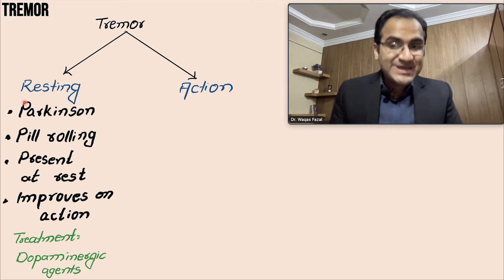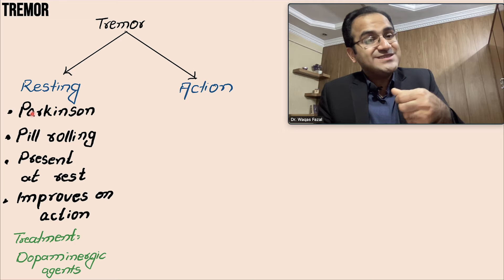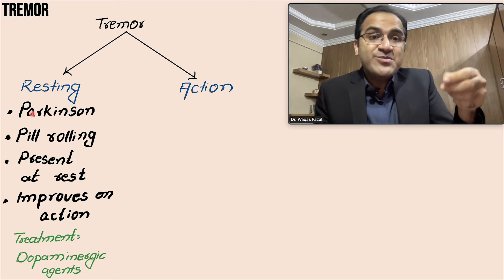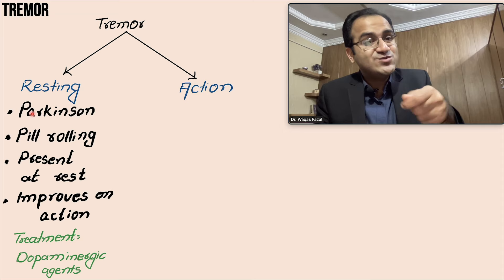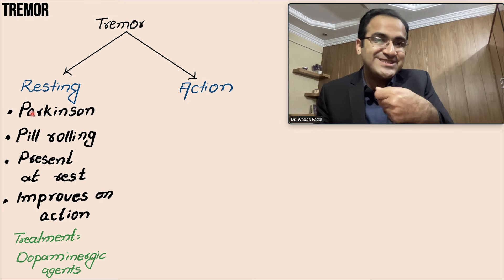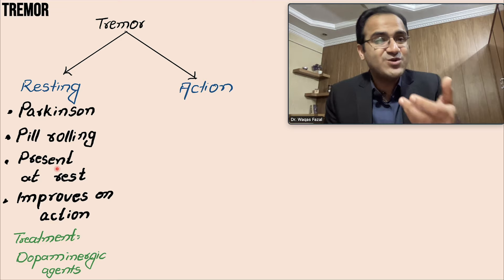Resting tremor is seen in Parkinson's disease. In Parkinson's disease you will see a pill rolling tremor, a tremor present at rest as if someone is counting money or rolling beads. The pill rolling tremor is present at rest in Parkinson's disease. Parkinson's can also have a movement as if someone is using a screwdriver. This tremor is present at rest and it improves on action — when the person tries to perform any activity, this tremor improves.